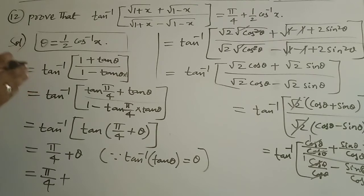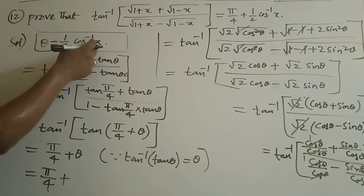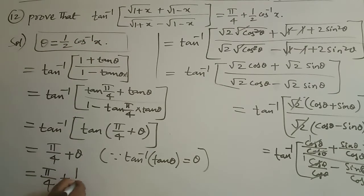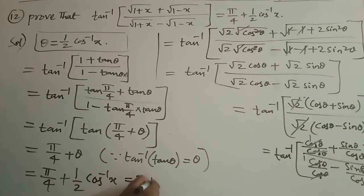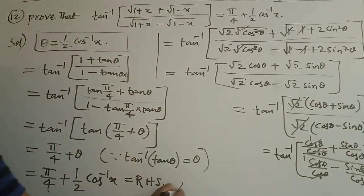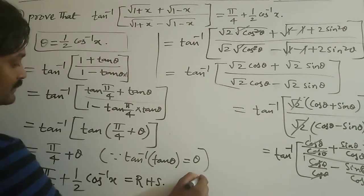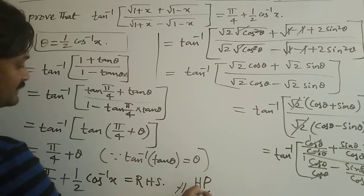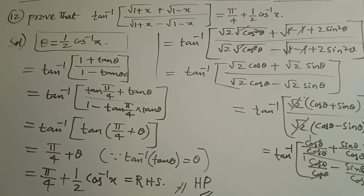Since x = cos2θ, substituting back: θ = ½cos⁻¹x. So we get π/4 + ½cos⁻¹x, which is exactly the RHS. Hence it is proved. If you still have any doubt, you can comment in the YouTube section so I can help you. Let's move on to problem number 13.